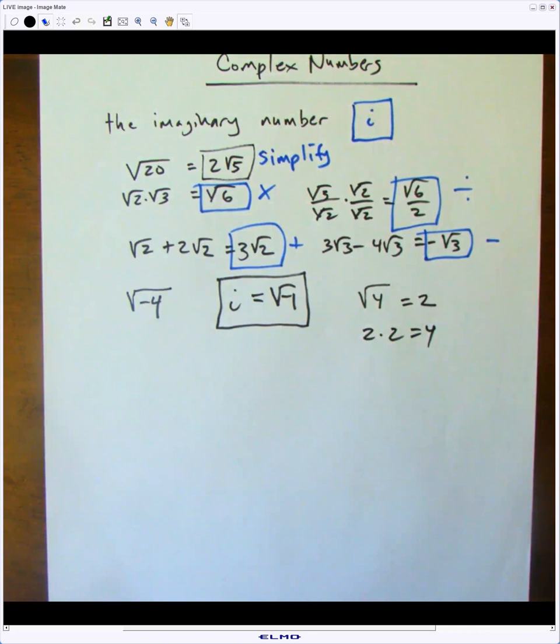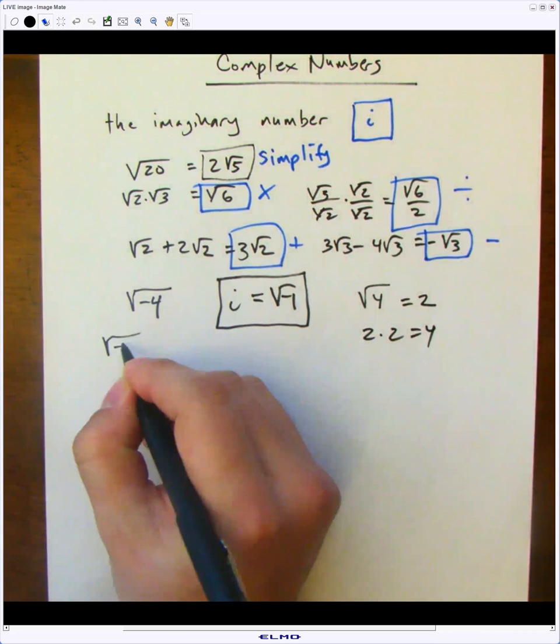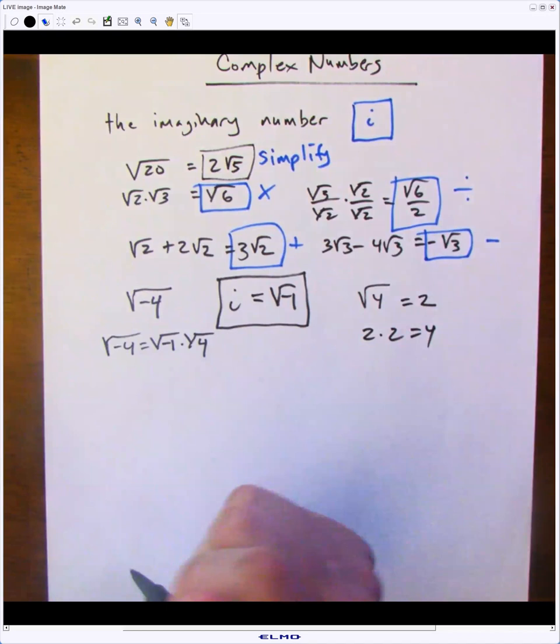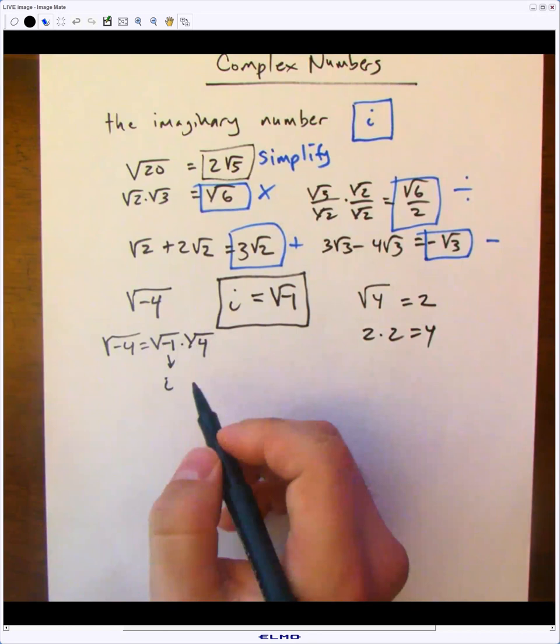So in the example of square root of negative 4, you would separate the negative by multiplying the square root of negative 1 and the square root of positive 4. Now you can replace the square root of negative 1 with i and simplify the square root of positive 4, which is 2.